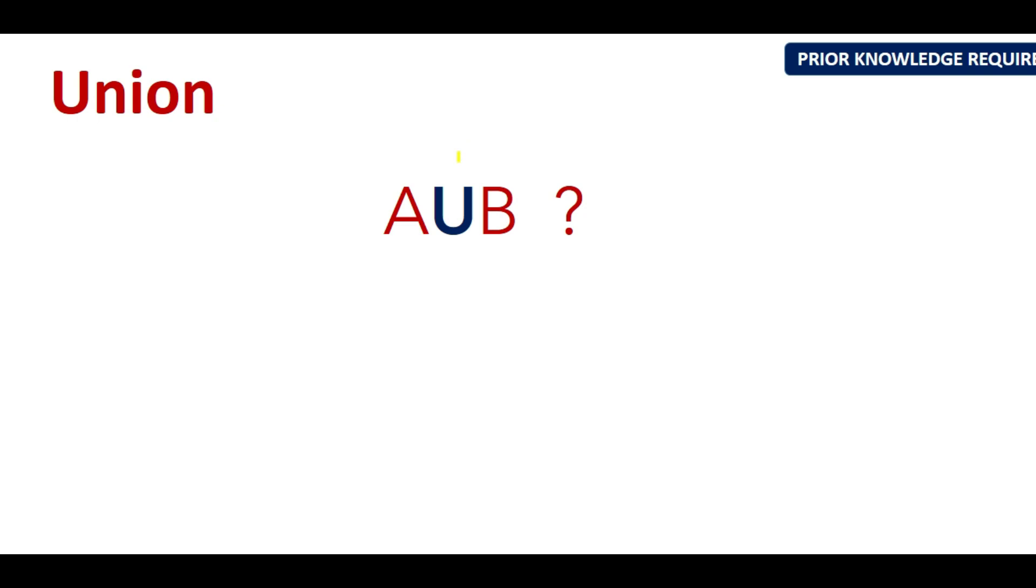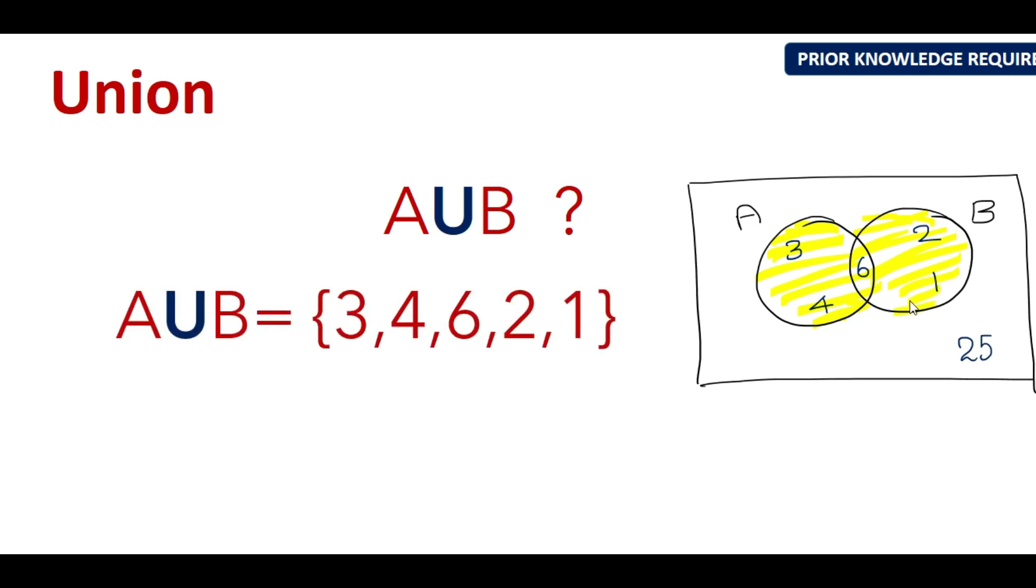Now let's take an example here. To find A union B, we have a Venn diagram given with set A and set B. So A union B, as we said together, we need A and we need B. So it's going to be the elements of A union B are 3, 4, 6, 2, 1, which is exactly from this yellow region. And make sure when you write the elements of A and B, 6 is common in between both the sets. You don't have to repeat it, just write it once.